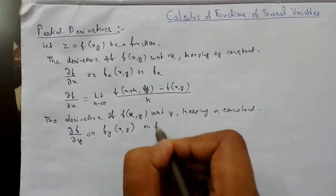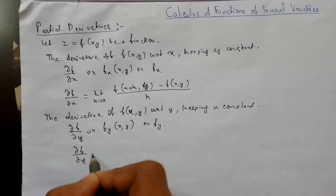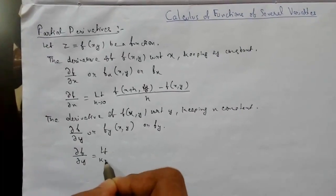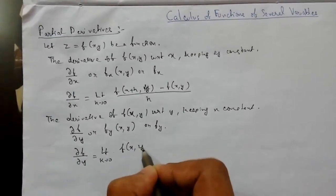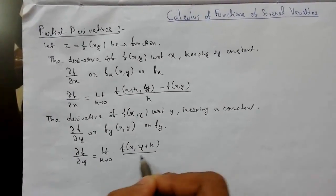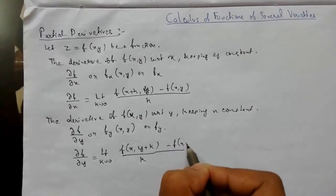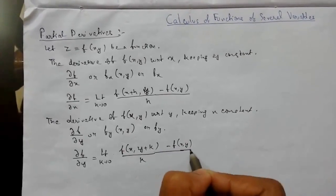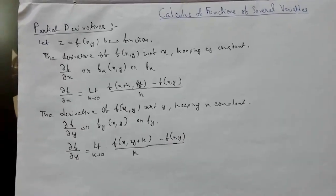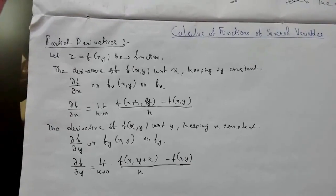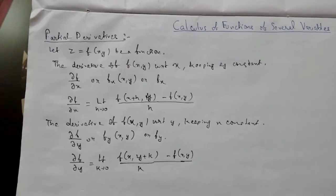This is denoted ∂f/∂y or f_y(x, y), or simply f_y. It equals the limit as k tends to zero of [f(x, y+k) − f(x, y)] / k. These partial derivatives can be extended to functions with more variables like x₁, x₂, x₃.